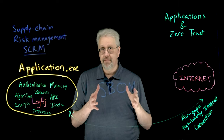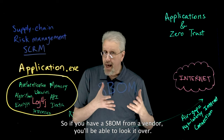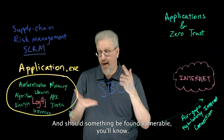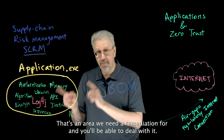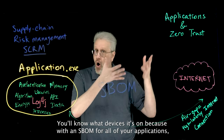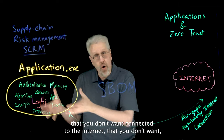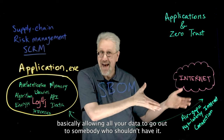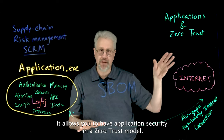The software bill of materials is a list of ingredients of all the things that went into that application. So if you have an SBOM from a vendor, you'll be able to look it over, and should something be found vulnerable, you'll know that's an area we need mitigation — that's an area we need remediation for. You'll know what devices it's on, because with an SBOM for all of your applications, you'll know where to go to look for those things that are vulnerable that you don't want connected to the internet, that you don't want allowing all your data to go out to somebody who shouldn't have it. The SBOM is your friend. It allows you to have application security in a zero trust model.